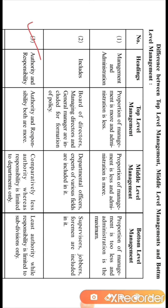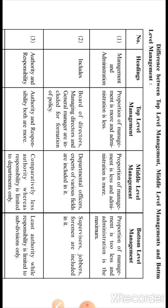The third point is authority and responsibility. Authority means power, and authority comes with responsibility. At the top level management, both authority and responsibility are maximum. The power is highest — they frame different policies, missions, and visions of the business. Their responsibility is maximum because they must take reports from middle and bottom level management, give directions, and monitor external factors affecting the business.